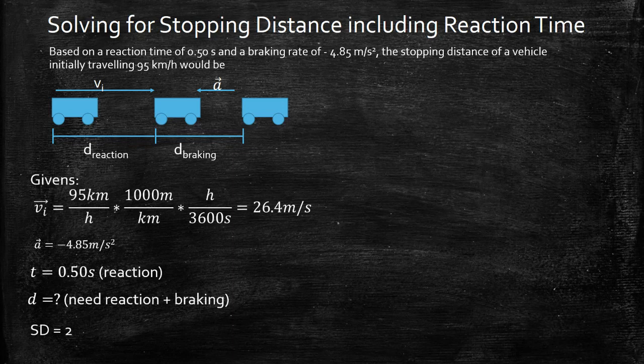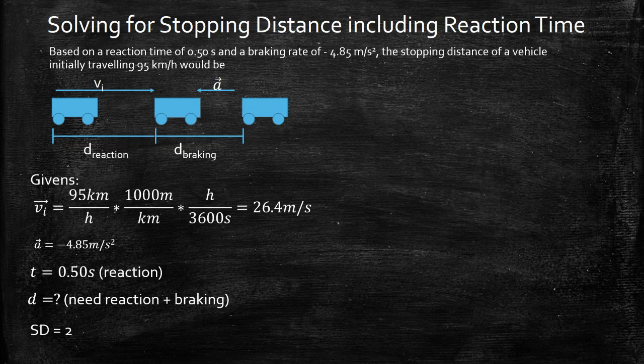From all that we can start to write down our givens. Remember to convert your kilometers per hour to meters per second and record all the givens that you can from reading the problem. So here we have our initial velocity, acceleration, time of the reaction time, and we need to calculate the distance during reaction and braking. We also can note that our answer needs to have two significant digits.